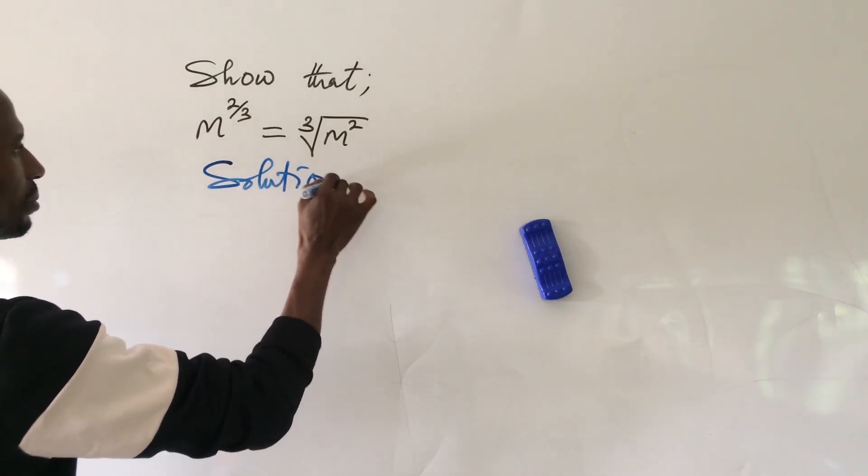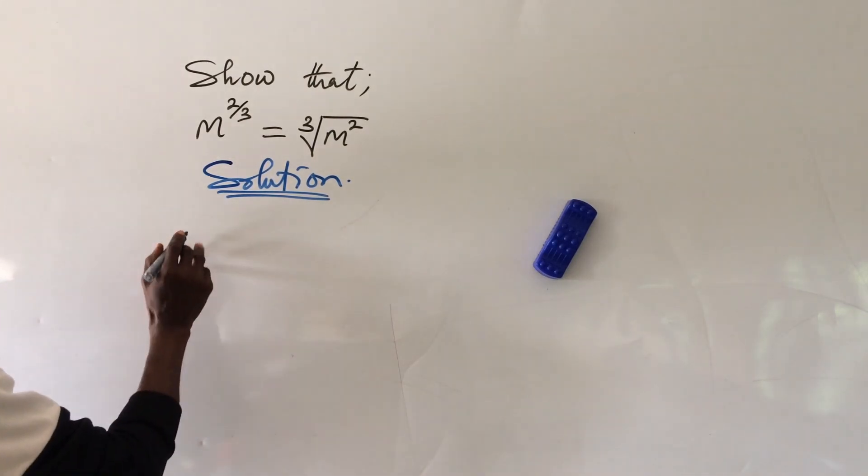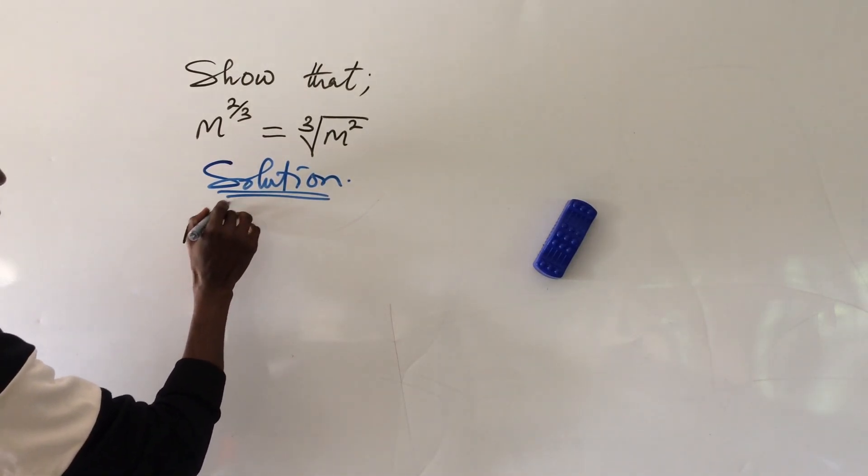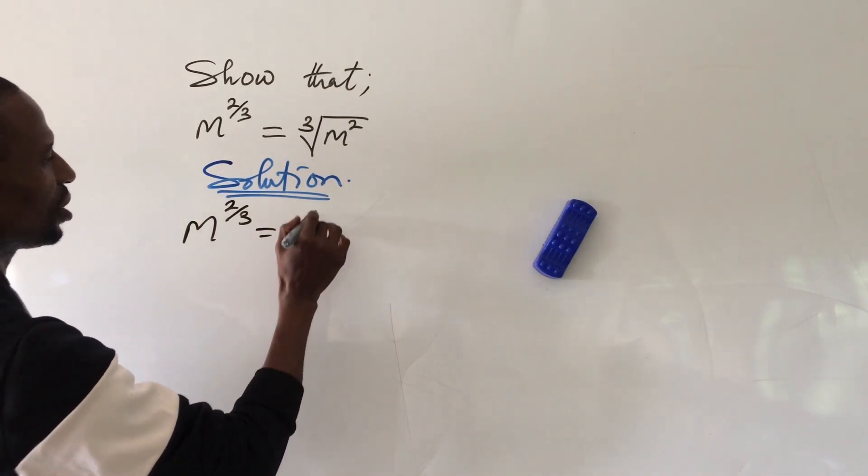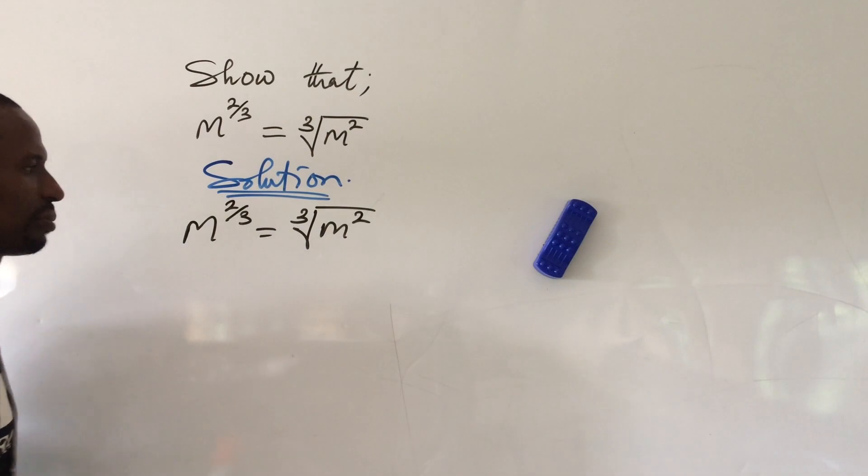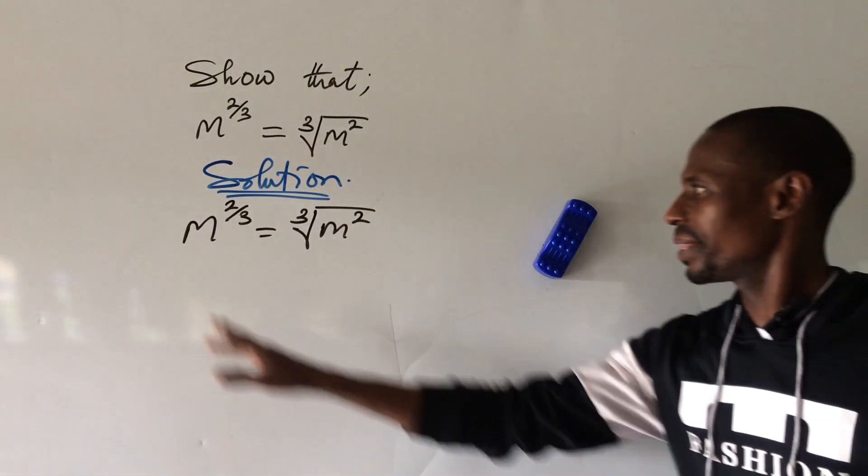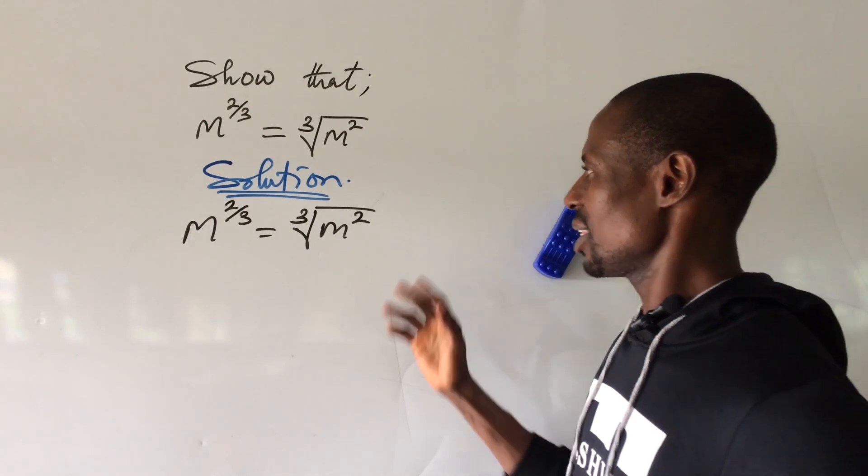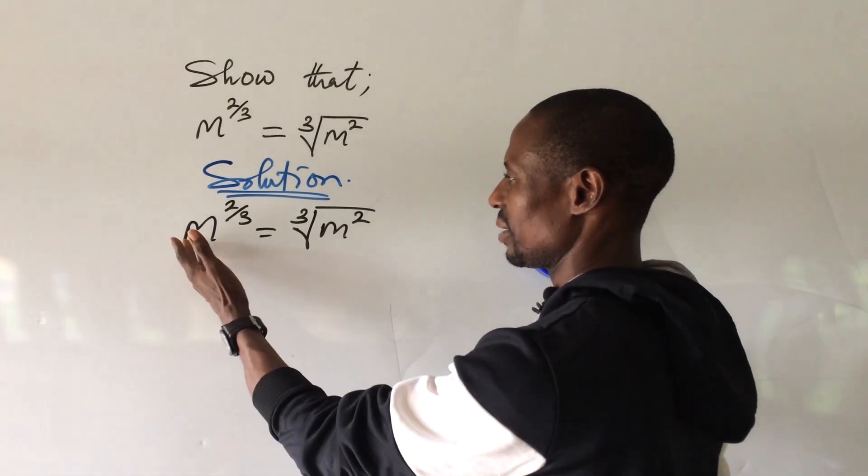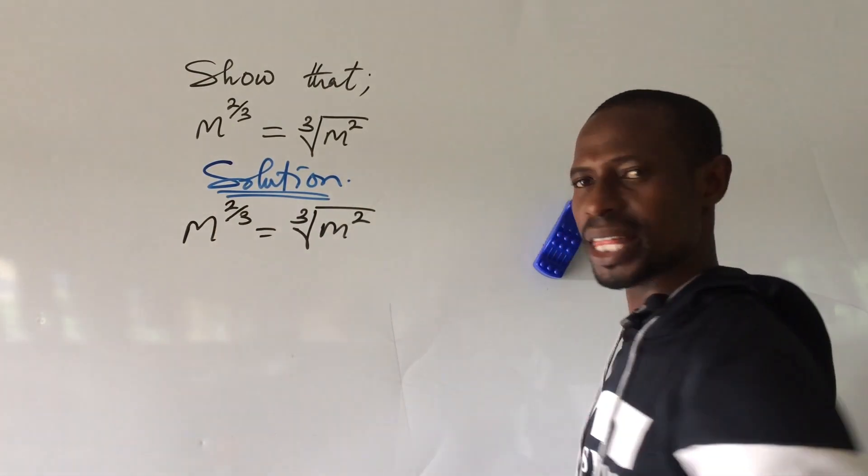Solution. So let's go ahead and pull down the question. The question is m to the power of 2 all over 3 equal to the cube root of m to the power of 2. Very easy. Now for us to prove that this is equal to this, at this point we're going to bring in another alphabet to represent our m to the power of 2 all over 3.